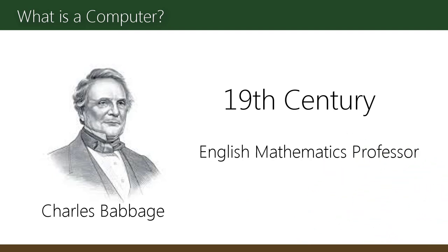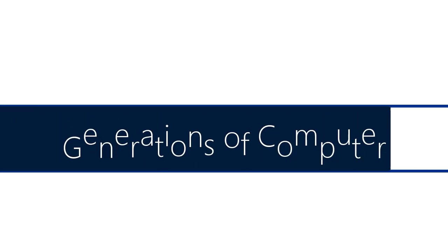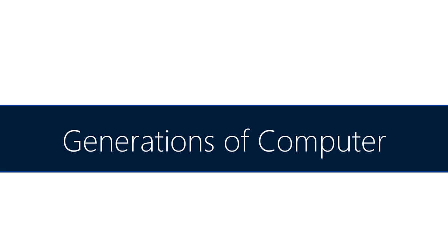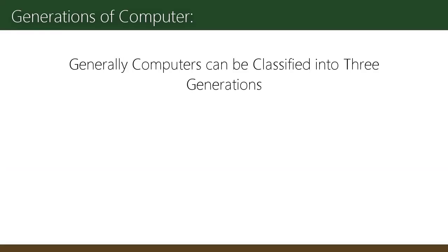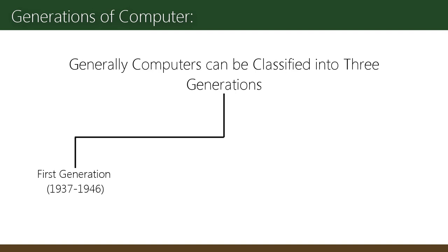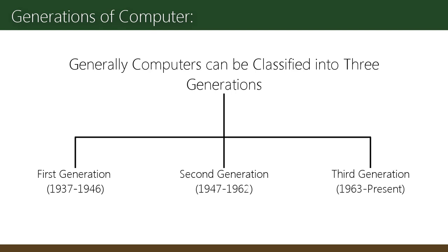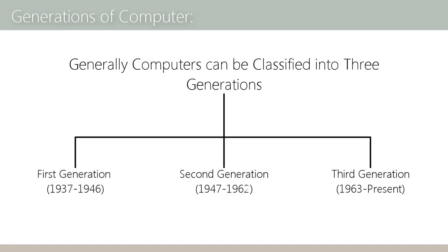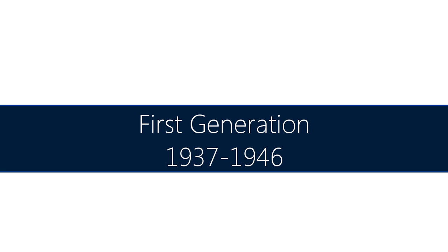An English mathematics professor named Charles Babbage played a key role in early computing history. Generally speaking, computers can be classified into three generations: the first generation from 1937 to 1946, the second generation from 1947 to 1962, and the third generation from 1963 to present times.